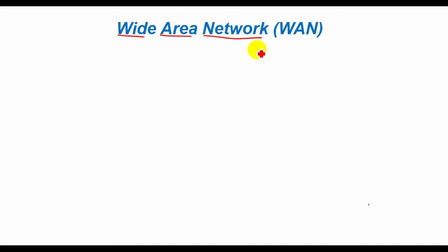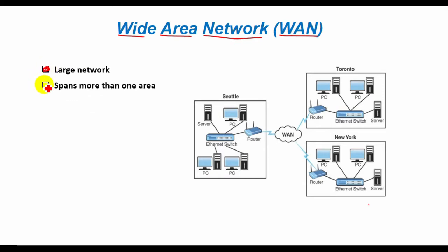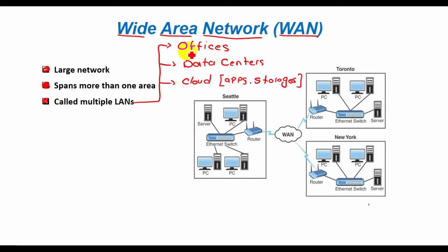Today I want to talk about wide area networks. A wide area network, also known as a WAN, is a large network of information that spans more than one geographic location, often connecting separate LANs, offices, data centers, cloud applications, and cloud storage together.